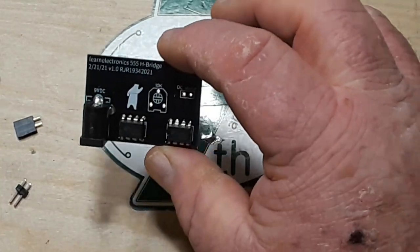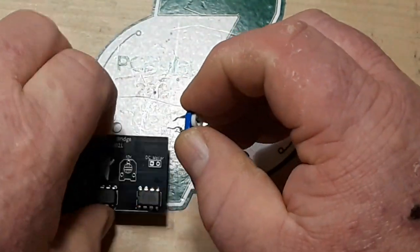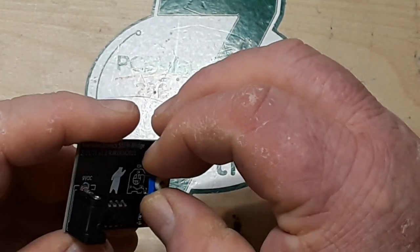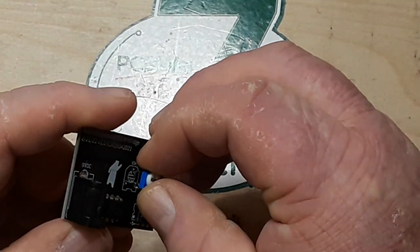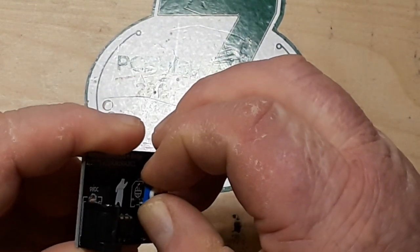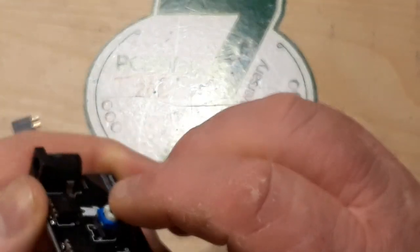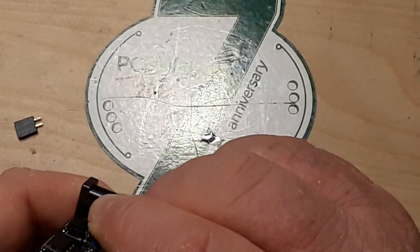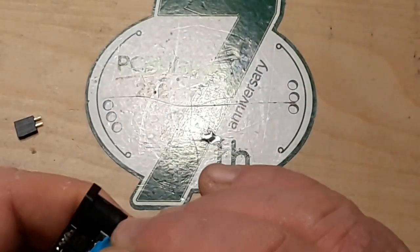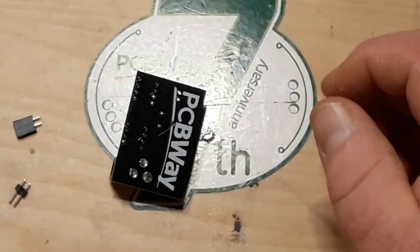Then we need our potentiometer. Calls for a 10K. Yeah, anything between 10 and 100 is going to be fine. Basically all your potentiometer is doing in this case is behaving like a directional switch, so we're good.